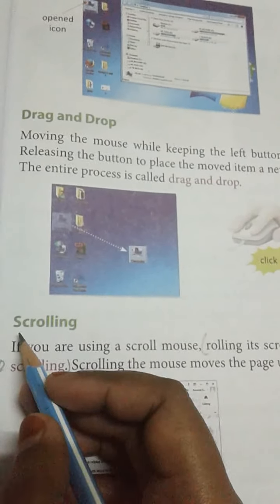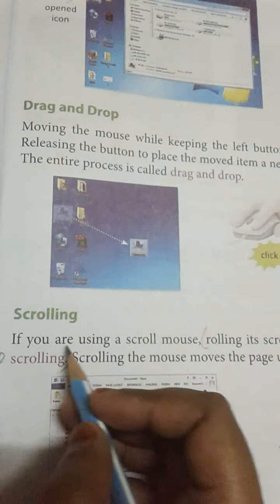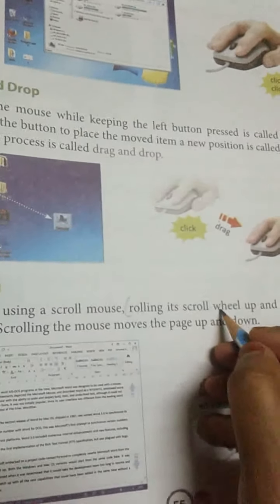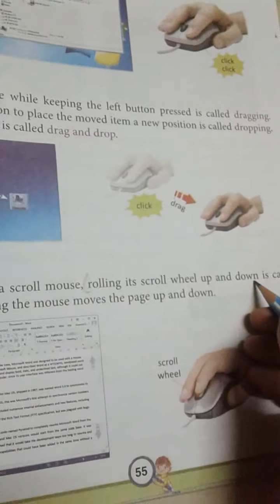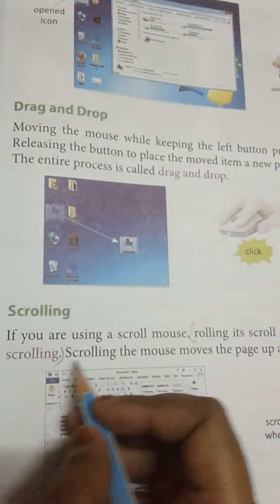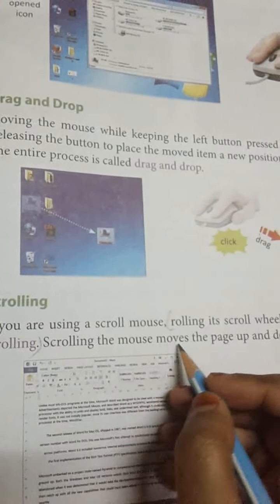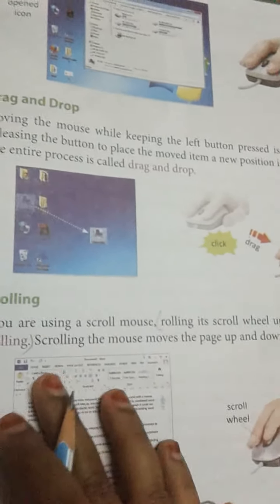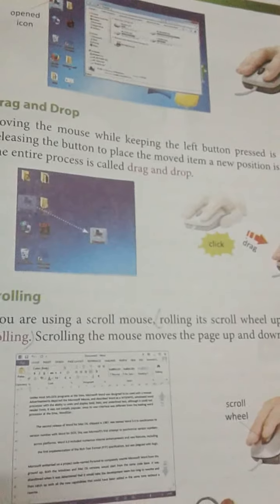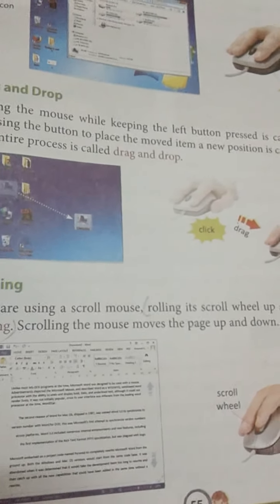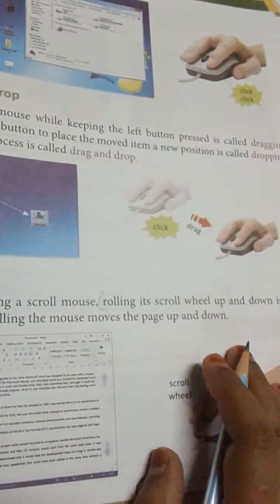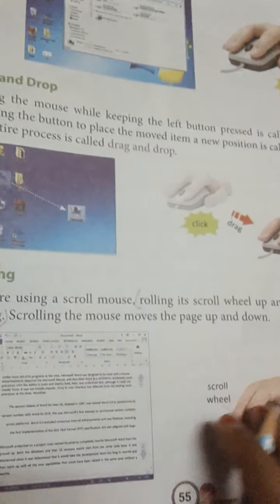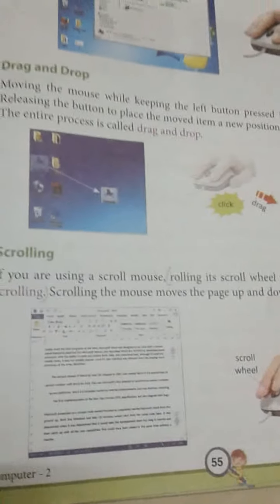Now what is scrolling? If you are using the scrolling mouse, rolling the scroll wheel up and down is called scrolling. Scrolling the mouse moves the page up and down. This is the scrolling wheel — it works to move the page up and down.